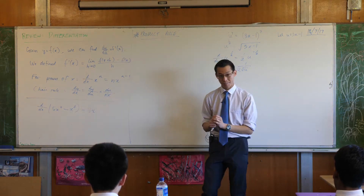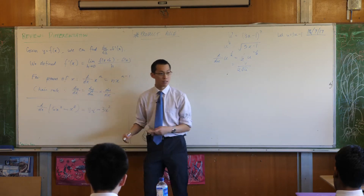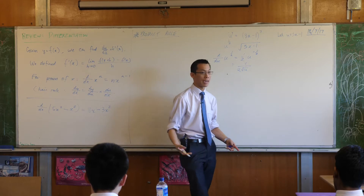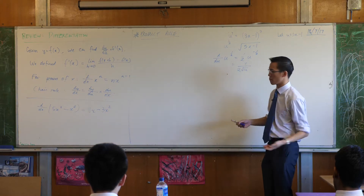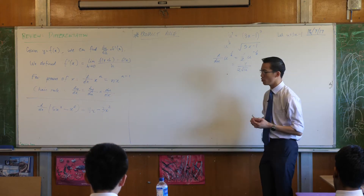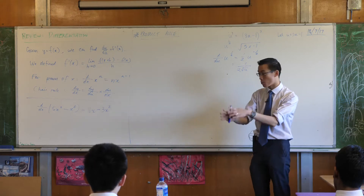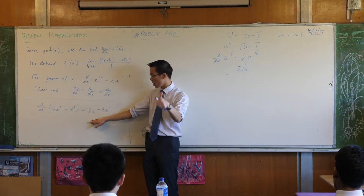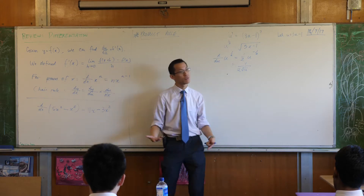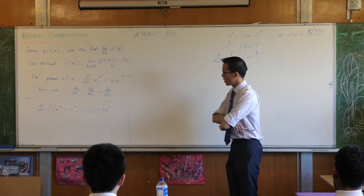What about the other term? Minus 3X squared. Are you happy with that? And sure enough, if you went and graphed 5X squared minus X cubed and then tried to inspect the gradient at each point, you would see that this would give you an accurate description of what the gradient is all the time. So far, so good.